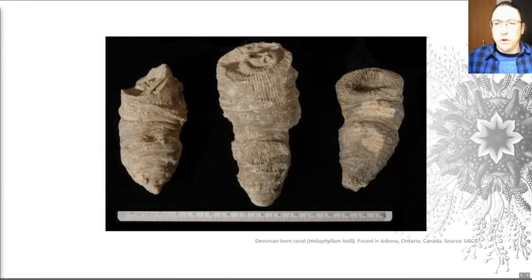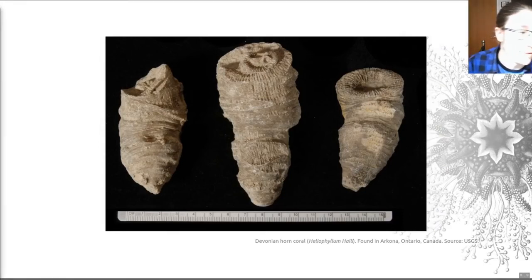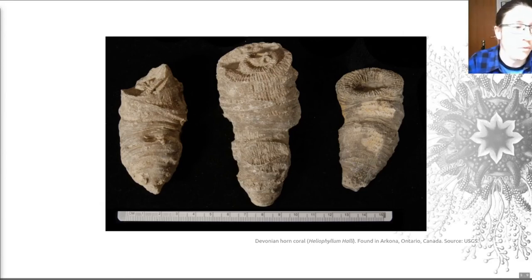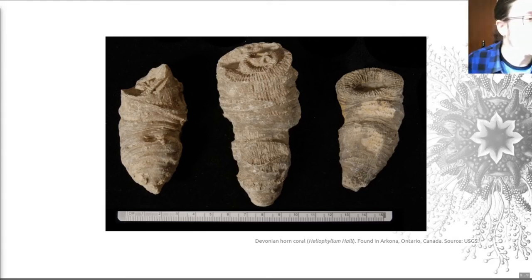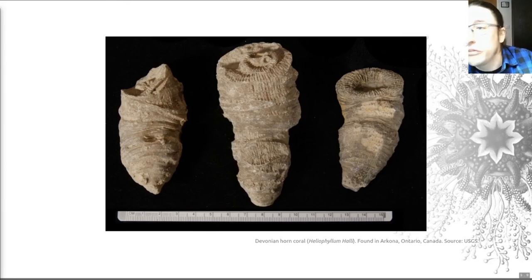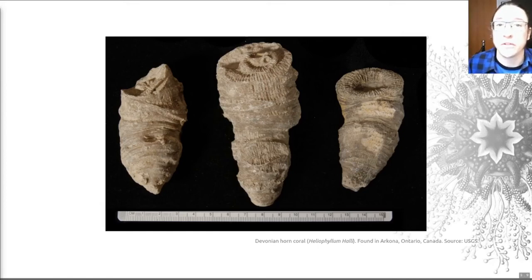Fossil corals are, with some caveats, good paleoenvironmental indicators. I wanted to finish this video by highlighting some really cool questions that we can get at using corals. A really cool example is based on the high-resolution study of Devonian horn corals, such as the ones visible here from Ontario, Canada. Well-preserved rugose corals of this kind display fine growth lines on their epitheca, and these are often grouped together into thicker bands.